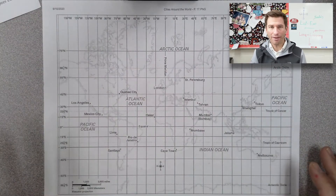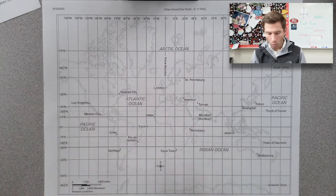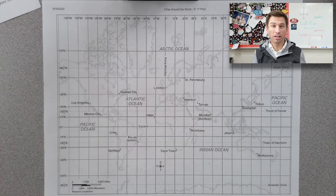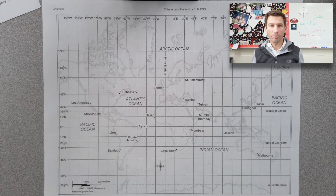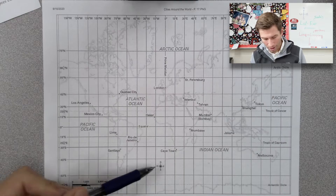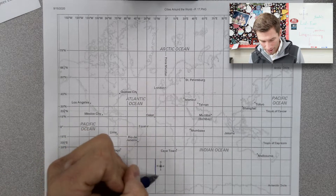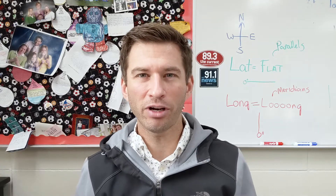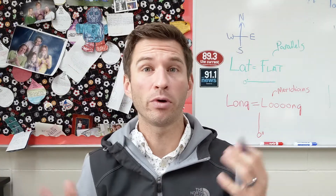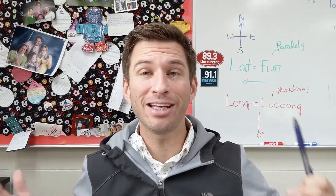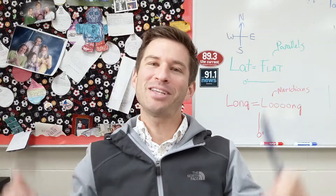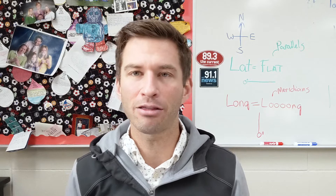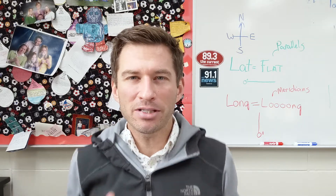Looking at our world map, the first thing we want to do anytime we're locating a place is get our bearings — get oriented. So we want to find our compass, which is located down here. We want to find our compass so we can figure out which way is north. Northeast, south, and west — never eat soggy worms — you all got it by now.